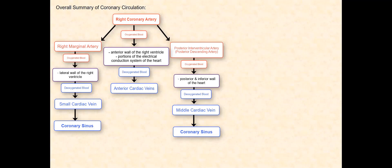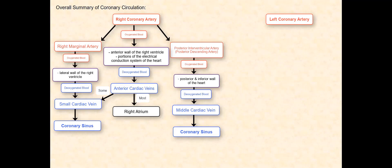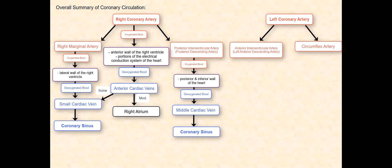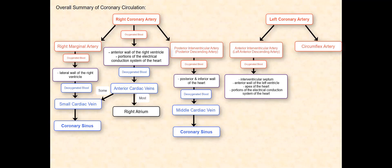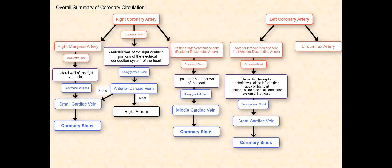For most individuals, the anterior cardiac veins directly drain into the right atrium, while for some individuals they converge with the small cardiac vein. The left coronary artery branches into two major arteries: the anterior interventricular artery, or left anterior descending artery, and the circumflex artery. The anterior interventricular artery supplies oxygenated blood to the interventricular septum, the anterior wall of the left ventricle, the apex of the heart, and portions of the electrical conduction system of the heart. The deoxygenated blood is then received by the great cardiac vein, which converges with the coronary sinus.